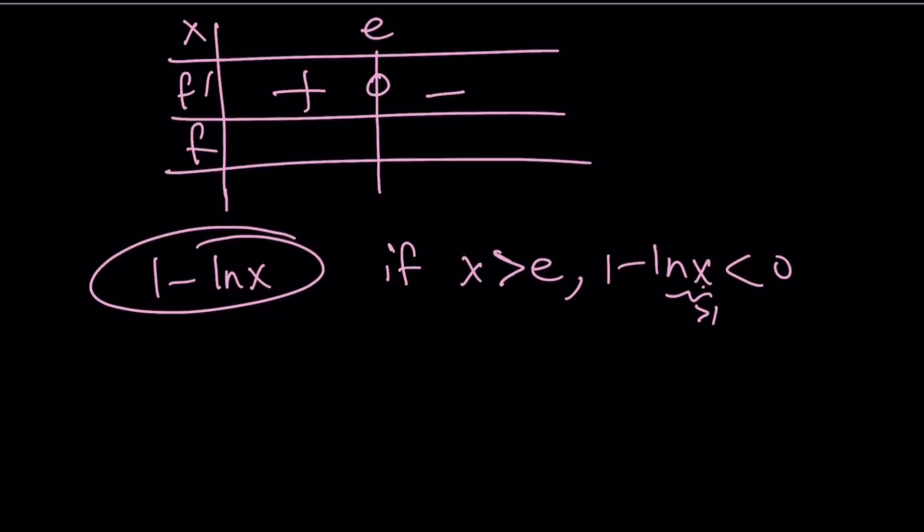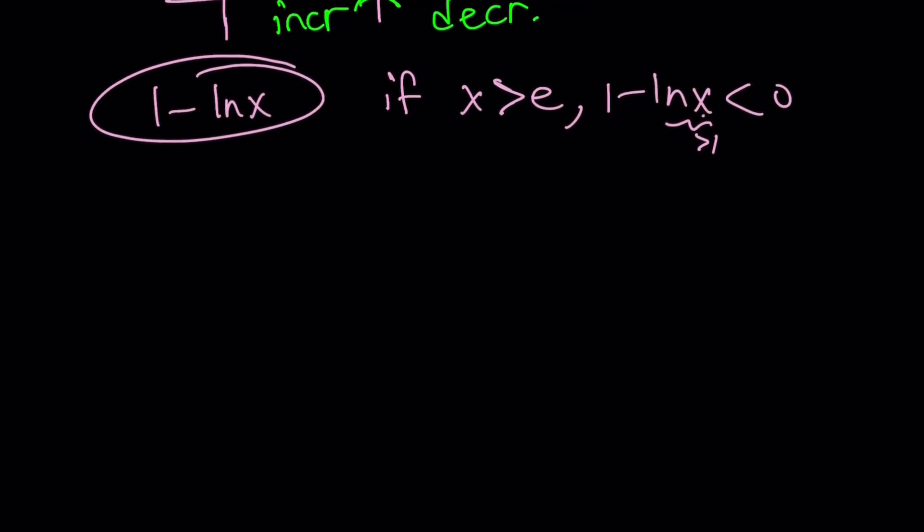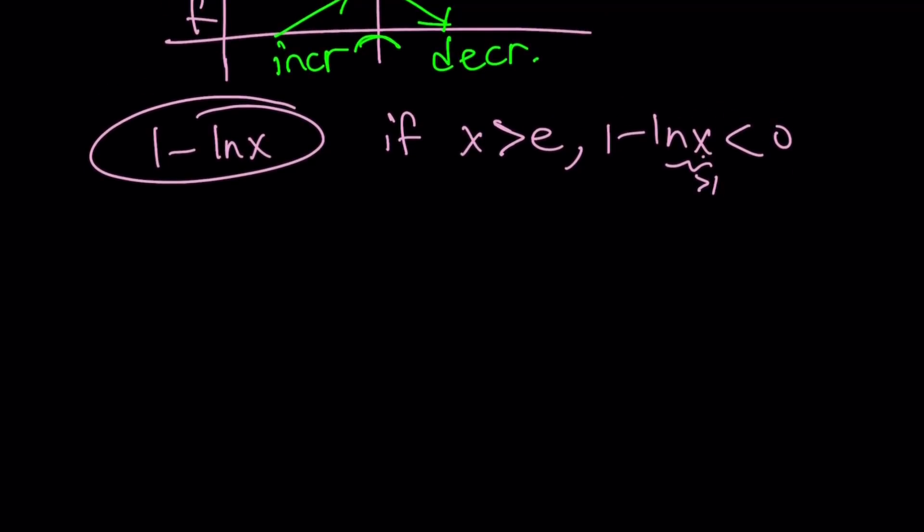Now, this means that our function is going to be increasing and then decreasing, which makes a maximum at x equals e. So, increasing first and then decreasing. Alright, great. So, now we can kind of use this information to look at the graph, but let's go ahead and evaluate or write down what it means.